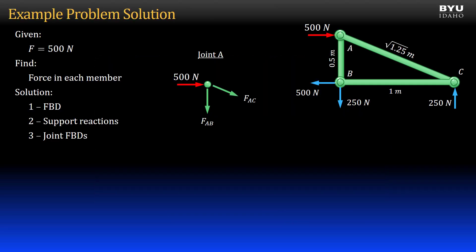I will start with joint A. I can be strategic here. If I sum forces in the x-direction first, then I can solve for force AC directly, since there is no x-direction component for force AB. Solving for force AC, I get that it is negative 559 Newtons.